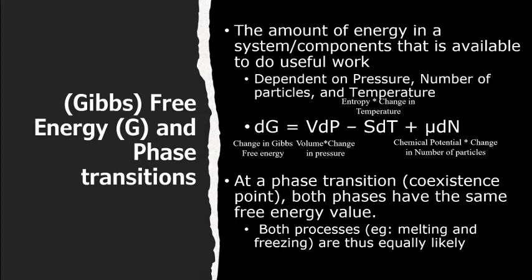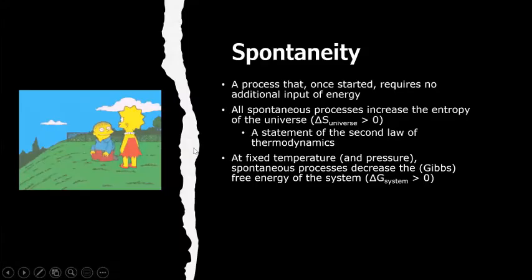At a phase boundary, the change in free energy between the two phases is zero, making both processes, for example, melting and freezing equally likely. We say that they are equally spontaneous.